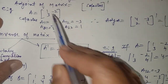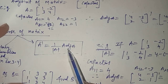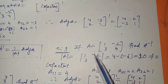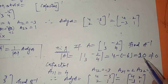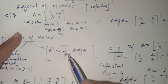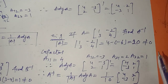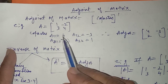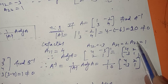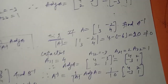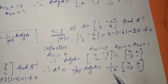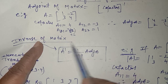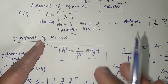I will find the inverse of the same matrix we already used. We already found the adjoint. Now find the determinant — it comes out to be 10, which is not equal to zero, so the inverse exists. We already found cofactors [4, -3; 2, 1] as the adjoint, so A⁻¹ = (1/10) × adj(A). Practice at least 5 to 10 questions on finding the inverse.